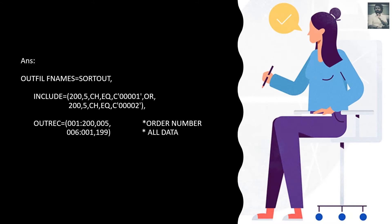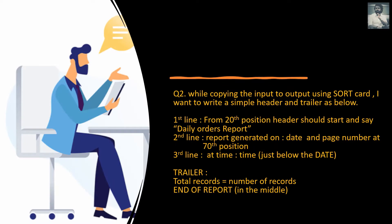And after the sixth position in the output file, we are just copying the remaining data from the input file. Let's see the second question: while copying the input to output using a SORT card, I want to write a simple header and trailer.